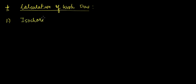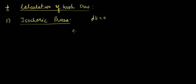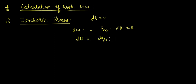I hope you all remember what an isochoric process is. An isochoric process is a process in which the change in volume is equal to zero. So we can write dW equals minus P_external times dV. Since dV equals zero, dW would also be zero. In the equation of internal energy, du equals dQ_V plus dW, the dW term would be zero.